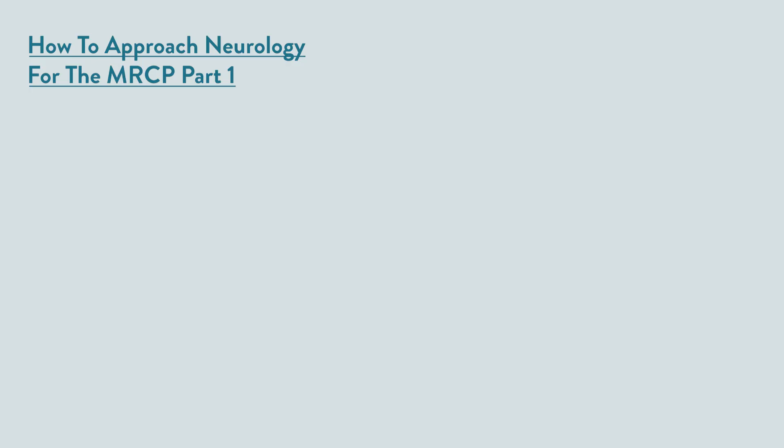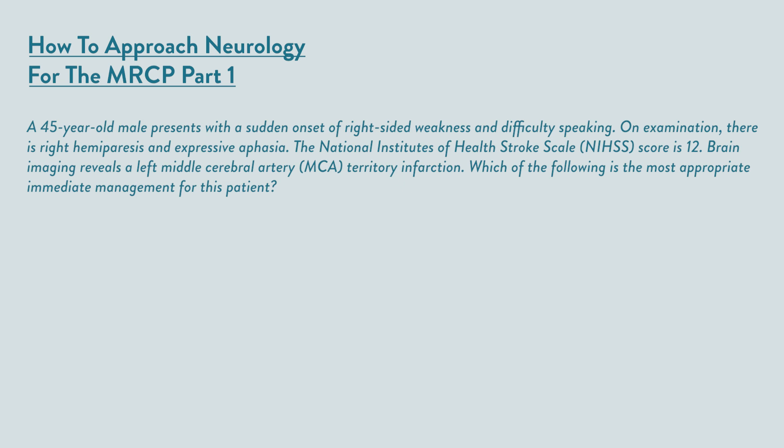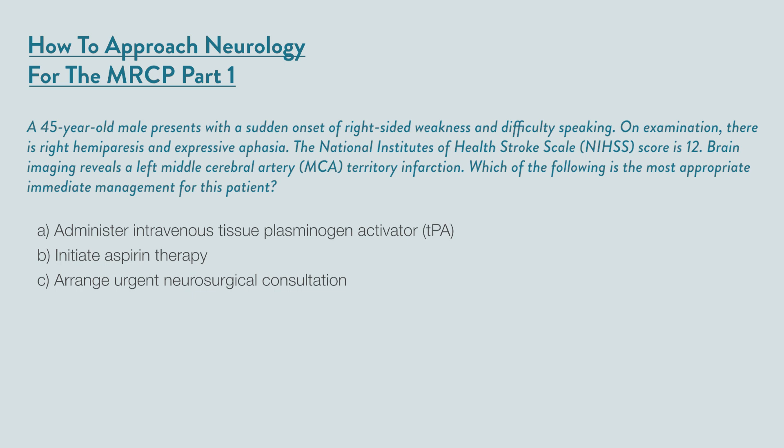So here is an example question. A 45-year-old man presents with a sudden onset right-sided weakness and difficulty speaking. On examination, there's a right hemiparesis and expressive aphasia. On the National Institutes of Health Stroke Scale score, he scores a 12. Brain imaging reveals a left middle cerebral artery territory infarction. Which of the following is the most appropriate immediate management? A: administer intravenous tissue plasminogen activator. B: initiate aspirin therapy. C: arrange urgent neurosurgical consultation. D: start antiepileptic medication. E: administer high-dose corticosteroids.